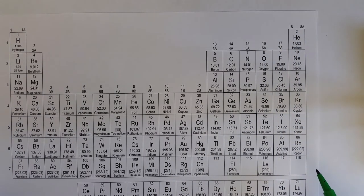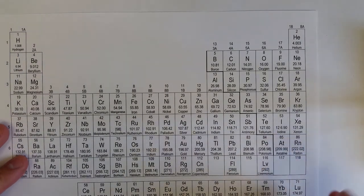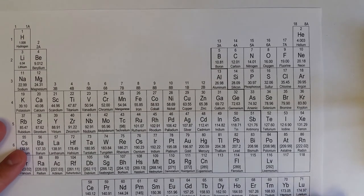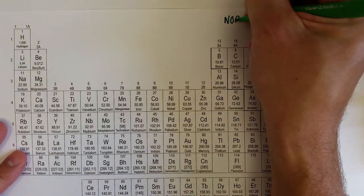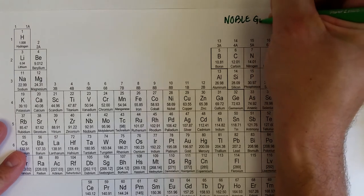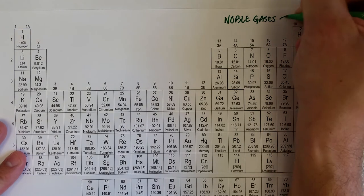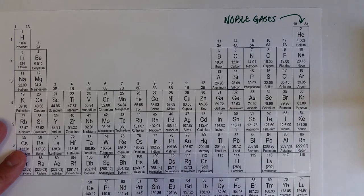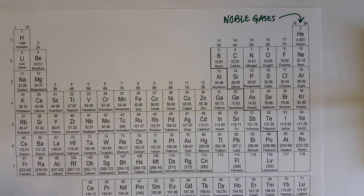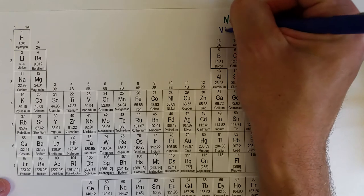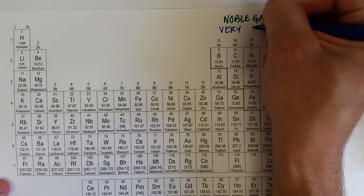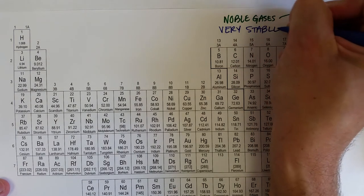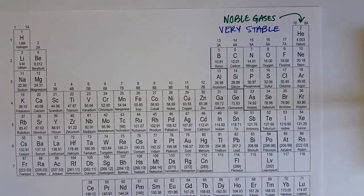If you remember our brief discussion of the noble gases, the noble gases in group 18, or 8A, we said that they are very unreactive. That is because they are very stable. They don't want to gain or lose electrons or share valence electrons with other atoms. They are very stable.